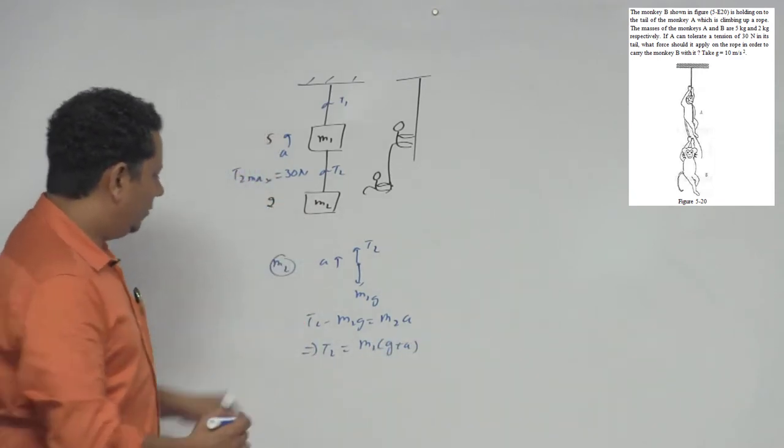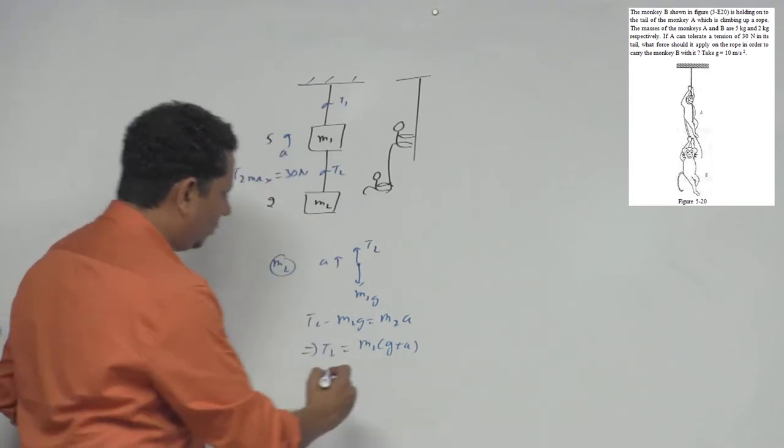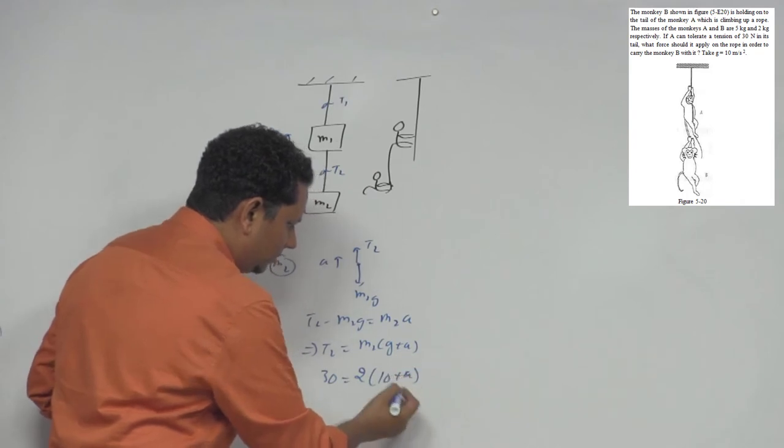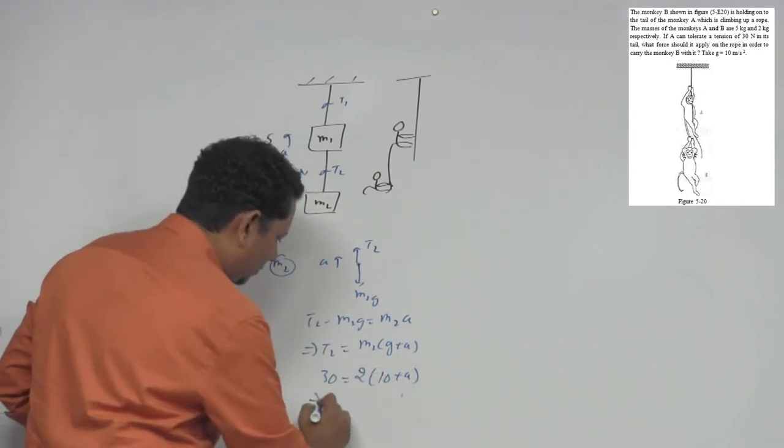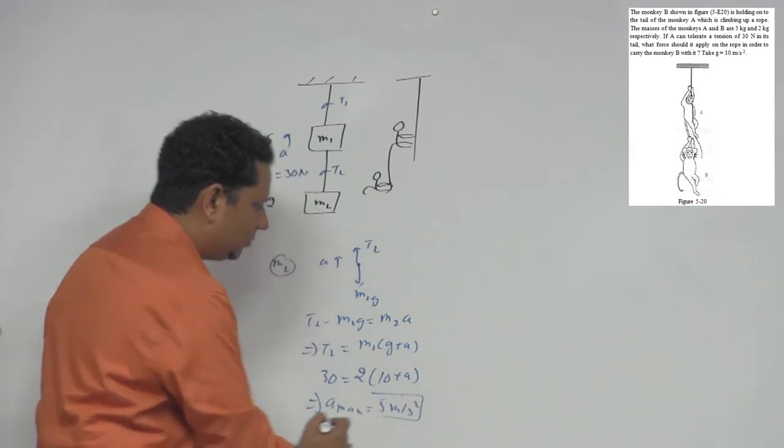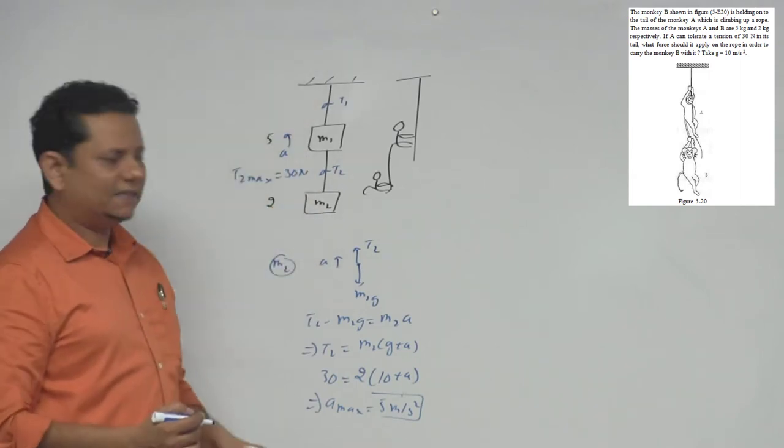Now, t2 ki aapne ko maximum value 30 dhe rakhi hai, so this will be equal to 30. M2 joh maha se, woh apne ko 2kg dhe rakha hai, aur yeh ho gaya g10 plus a. So isko jab hum solve karenge, divide karke 15 minus karenge, so aapka a maximum joh aaya, woh ho gaya aapka 5 meter per second square. So this is the maximum acceleration jis se yeh pura system oopar jaa sakta hai.